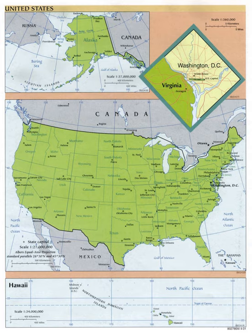The government of each of the five permanently inhabited U.S. territories is also modeled and organized after the federal government. Each is further subdivided into smaller entities. Puerto Rico has 78 municipalities, and the Northern Mariana Islands has four municipalities. Guam has villages, the U.S. Virgin Islands has districts, and American Samoa has districts and unorganized atolls. Other U.S. sub-national divisions include the District of Columbia, several minor outlying islands, and Indian reservations, all of which are administered by the federal government.